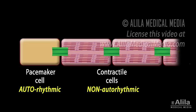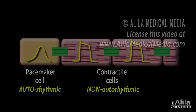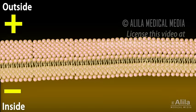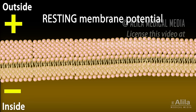Pacemaker cells and contractile myocytes exhibit different forms of action potentials. Cells are polarized, meaning there is an electrical voltage across the cell membrane. In a resting cell, the membrane voltage, known as the resting membrane potential, is usually negative.